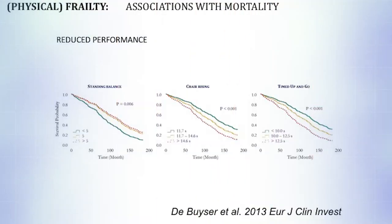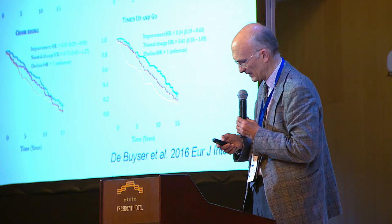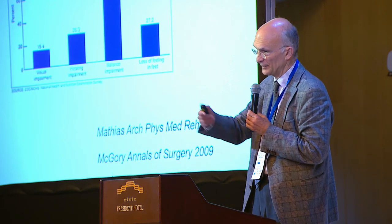Why is that important? I'm briefly showing you the results of our own group, in which we have shown that the functional status of the patient at baseline is predictive in terms of mortality. And also, after a period of three years, it remains predictive. So people who function less at baseline will have a higher risk of mortality within a period of time.